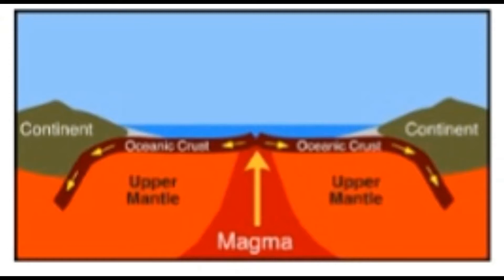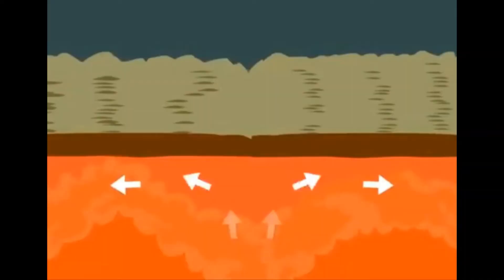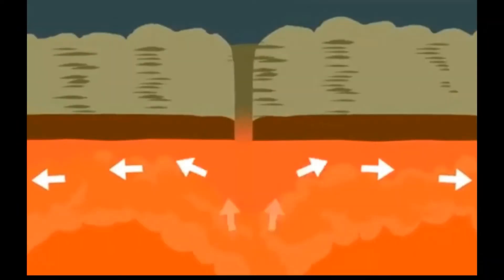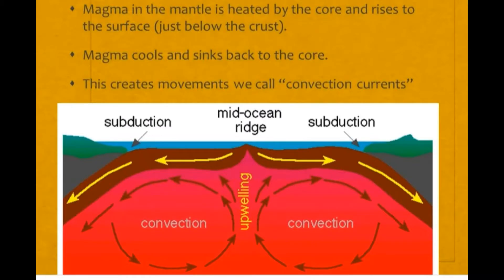This process of continental drift is caused by the movement of the molten material in the Earth's mantle. The magma in the mantle moves in a circular motion called convection current. The movement of the magma causes the tectonic plates to push upwards at the plate boundaries and causes the plates to move, spread apart, and this causes continental drift.